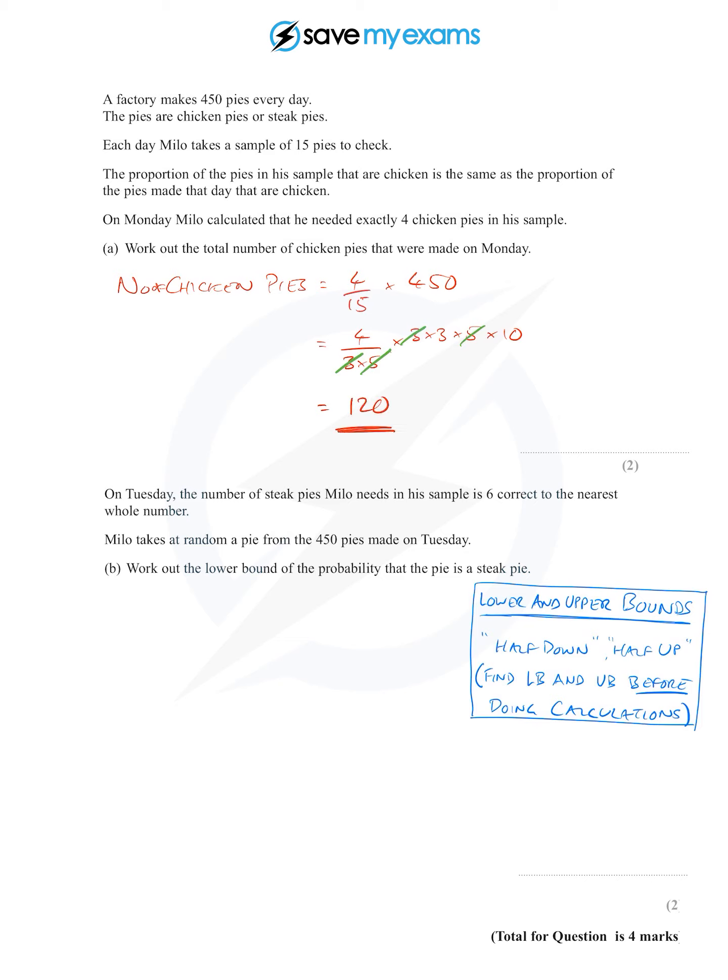On Tuesday, the number of steak pies Milo needs is 6, correct to the nearest whole number. That would suggest we need some upper and lower bounds here.